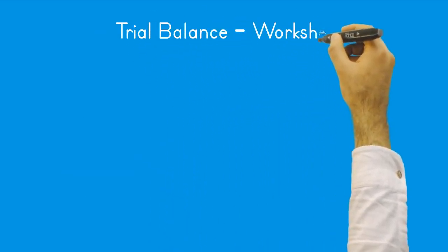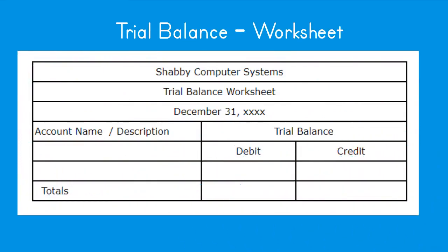Trial balance worksheet. The heading area includes the company name, title/description of the worksheet, and the period ending date. Columns include the account name/number and a trial balance column with debit and credit columns. These unadjusted account balances are taken directly from your general ledger. Totals are included to prove the accuracy of our postings — they prove that our debit balances equal our credit balances.